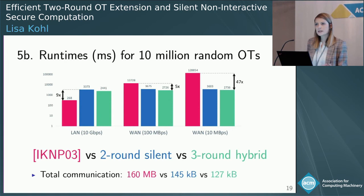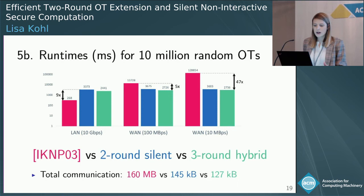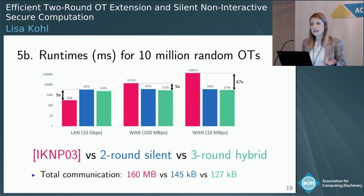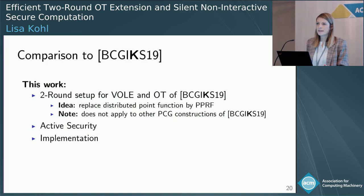Security is then based on LPN with quasi-cyclic codes, similar to post-quantum cryptosystems like SPIKE and HQC. We implemented it to show concrete efficiency improvements, especially when communication is crucial. At 10 gigabit per second, IKNP is still faster at 0.2 seconds, but our approach is almost independent of bandwidth — just kilobytes instead of megabytes. At 10 megabit per second, we have only 2.7 seconds for 10 million OTs, whereas IKNP would take over two minutes — almost a factor of 50 improvement in this setting.